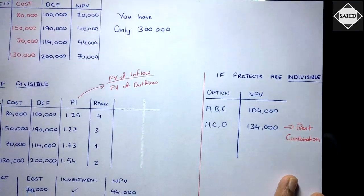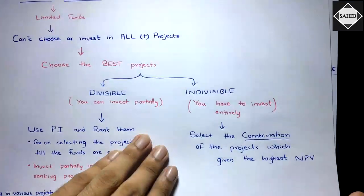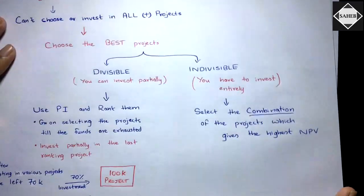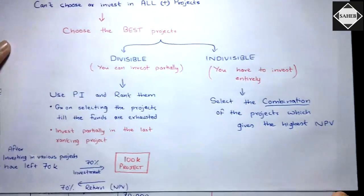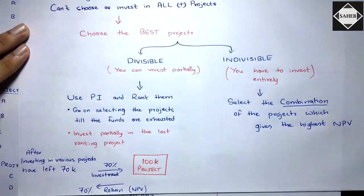Capital rationing is straightforward: for divisible projects, rank by PI and select until funds are exhausted, investing partially in the last project. For indivisible projects, choose the combination with the highest NPV within your budget. See you in the next video.